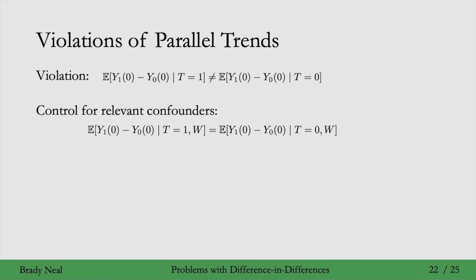Now we have this sort of difference analog of that. So that was to get independence between the potential outcome, like just one of these, and treatment. We had to condition on W, but now we have this difference analog here. So maybe conditioning on some variables W can help you ameliorate your violation of parallel trends, and then you get parallel trends conditional on W, which is fine. You can still do difference-in-differences estimation there.